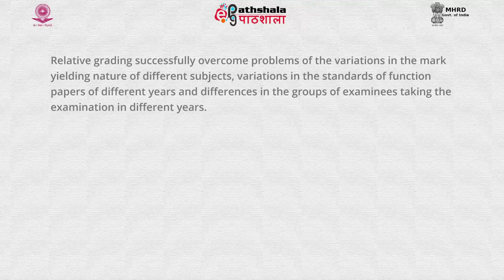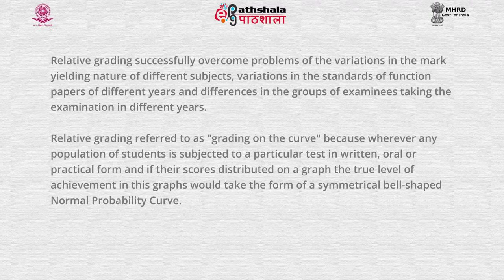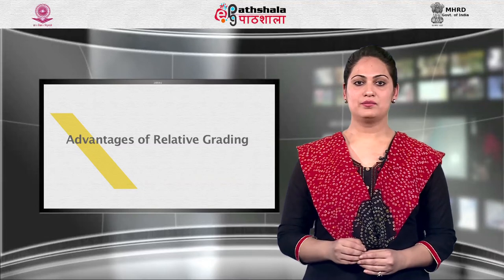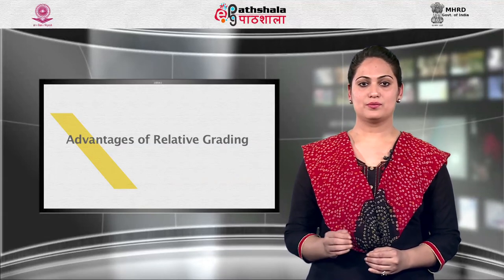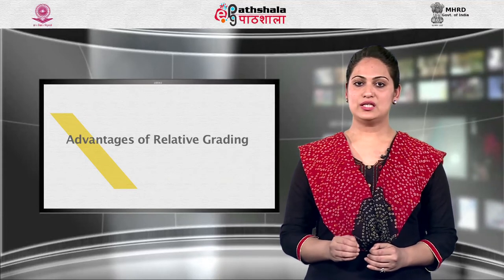Relative grading also addresses variations in the standards of papers across different years and differences in groups of examinees. Relative grading is referred to as grading on the curve because when any population of students is subjected to a test in written, oral, or practical form, their scores distributed on a graph would take the form of a symmetrical bell-shaped normal probability curve. Its advantages are: it is straightforward and clearly specifies what grades students will receive, and it presents grade information when teachers are too lenient in their grading.